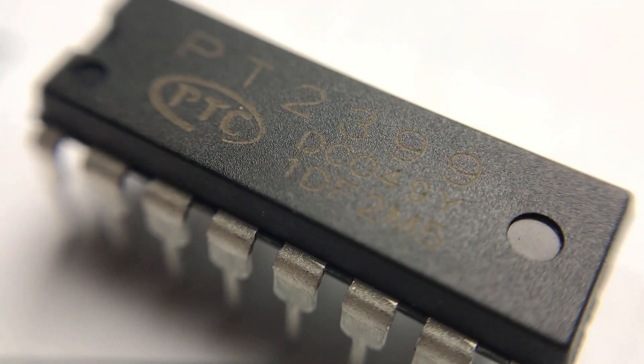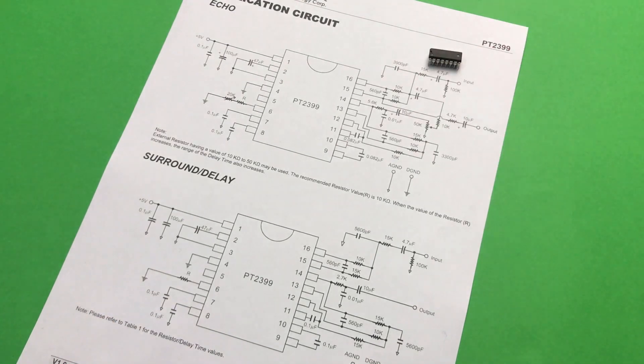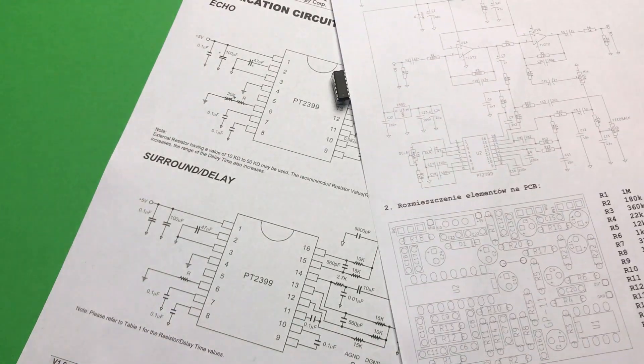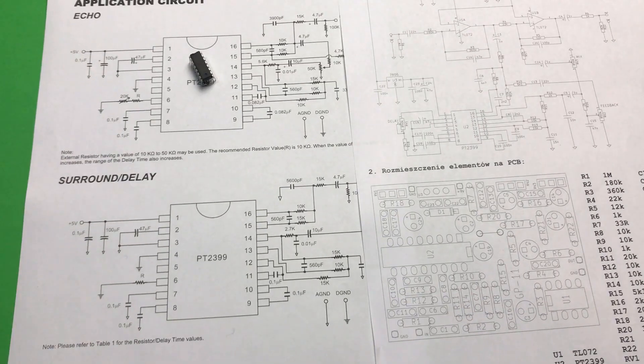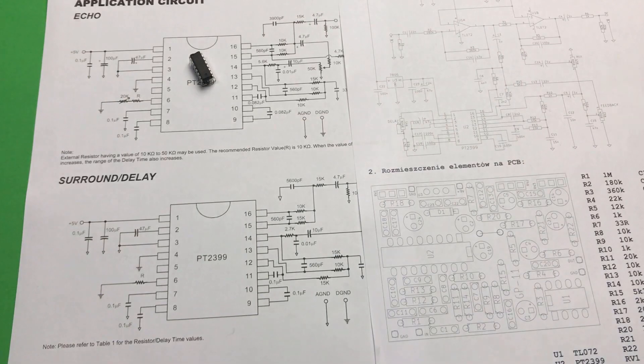Of course the situation is pretty similar with different types of pedals. For example, this PT2399 chip is used in many delay pedals. The schematics for how to use this chip is provided by its manufacturer. You can find it in its datasheet.